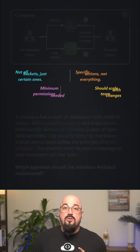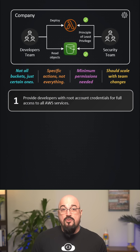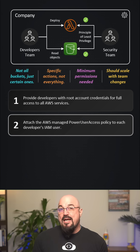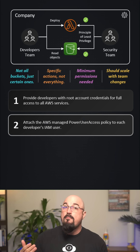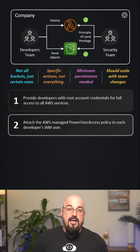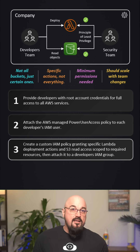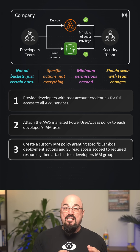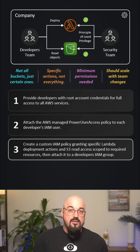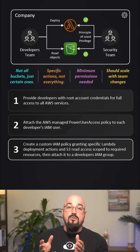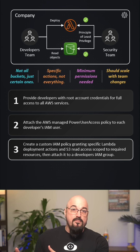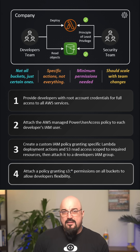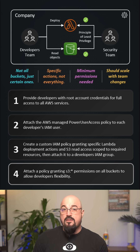Let's talk about the options. Option one: provide developers with root access credentials for full access to all AWS services. Option two: attach the AWS managed Power User Access policy to each developer's IAM user. Option three: create a custom IAM policy granting specific Lambda deployment actions and S3 read access scoped to the required resources, then attach that policy to a developer's IAM group. Option four: attach a policy that grants S3 star permissions on all buckets to allow developers maximum flexibility.